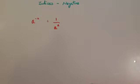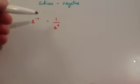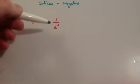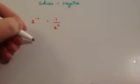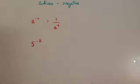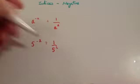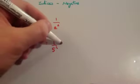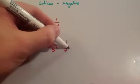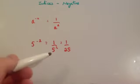In this video we're going to look at indices — negative indices. If you've got any number to the power of minus n, that's the same as 1 divided by a to the n. For instance, if you had 5 to the power of minus 2, that would be the same as 1 over 5 squared. Now 5 squared is 25, so that would be 1 over 25. Whenever you've got a negative power, it's the same as 1 over the positive power.